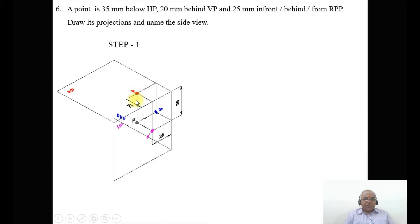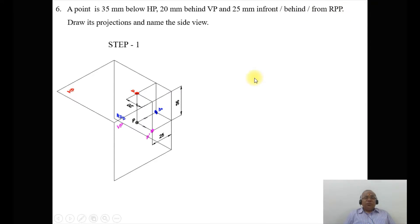The distance from the point to the HP is 35 mm below HP, and 20 mm behind VP — that distance from this point to this point is 20 mm behind VP. And then 25 mm in front of or behind or from RPP. So the condition of this quadrant is the third quadrant, where the point is below HP and behind VP.